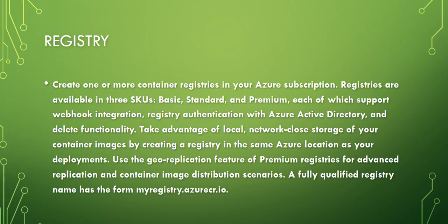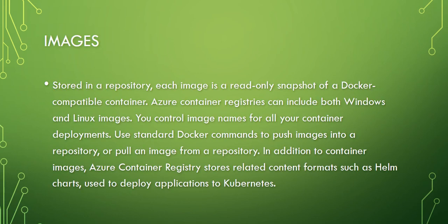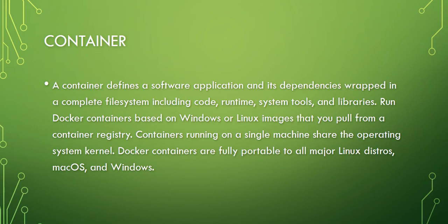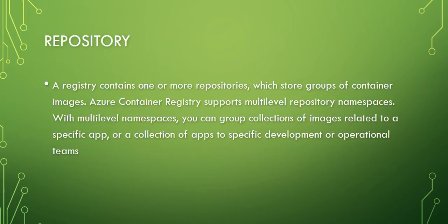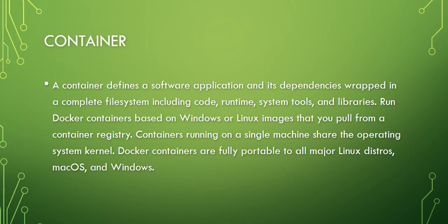To do a brief recap: you create a registry of any SKU you want and integrate it for authentication with Azure Active Directory. Then you create a repository inside the registry where you store your container images or a group of container images. The images are stored in a repository — each image is a read-only snapshot of a Docker-compatible container. From that image you can pull out a Docker-compatible container instance. So the hierarchy is: registry → repository → image → container.